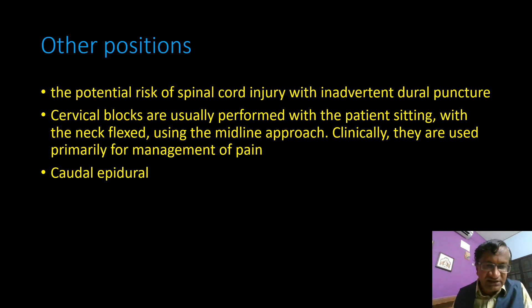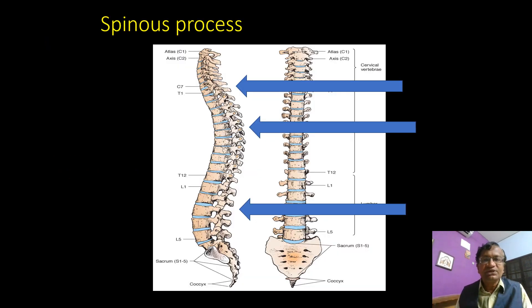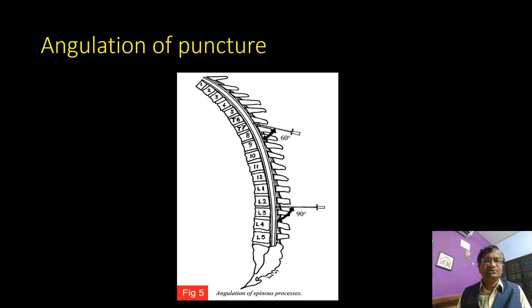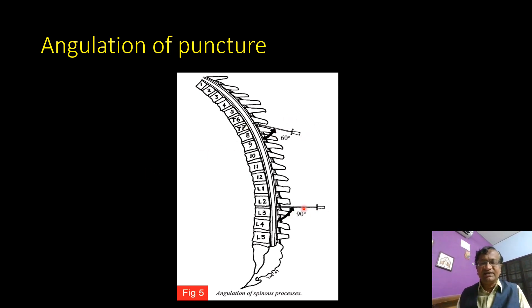In the cervical, thoracic, and lumbar regions, the epidural space varies. From T3 to T7 it is very difficult to place an epidural, even for experts. After T7-T8 there is a slight gap, so go paramedian. We prefer not to work at L1-L2 due to spinal cord risk.